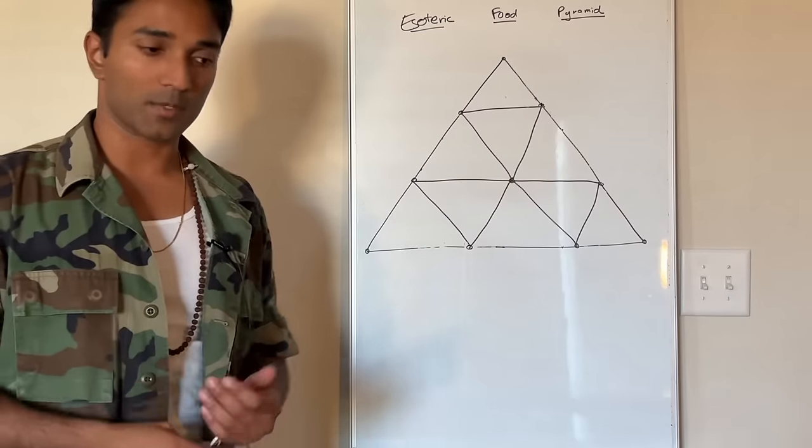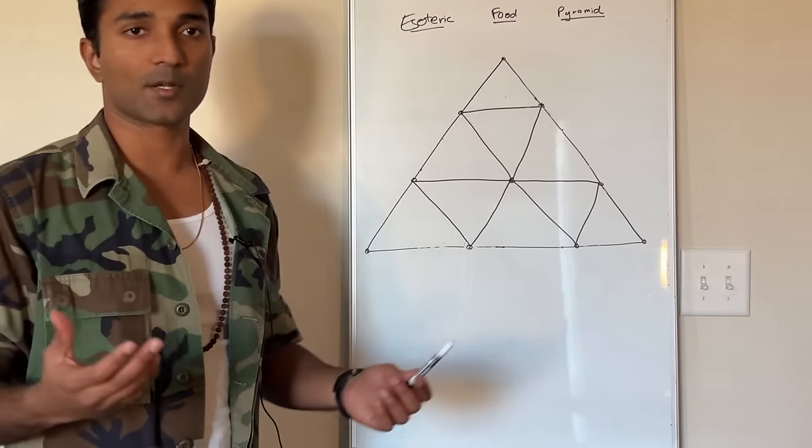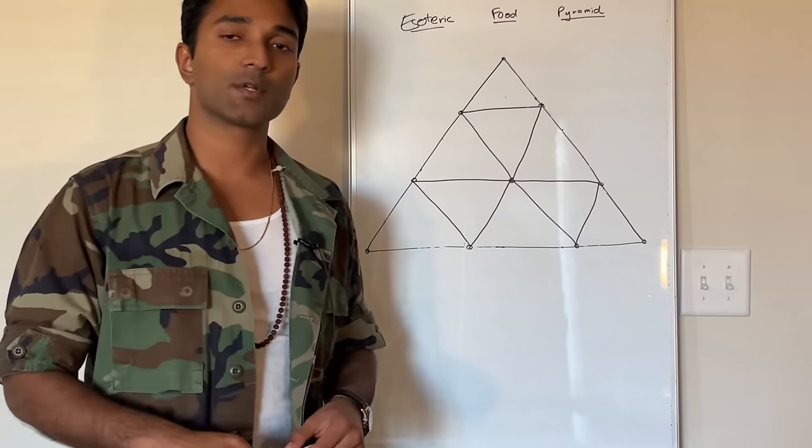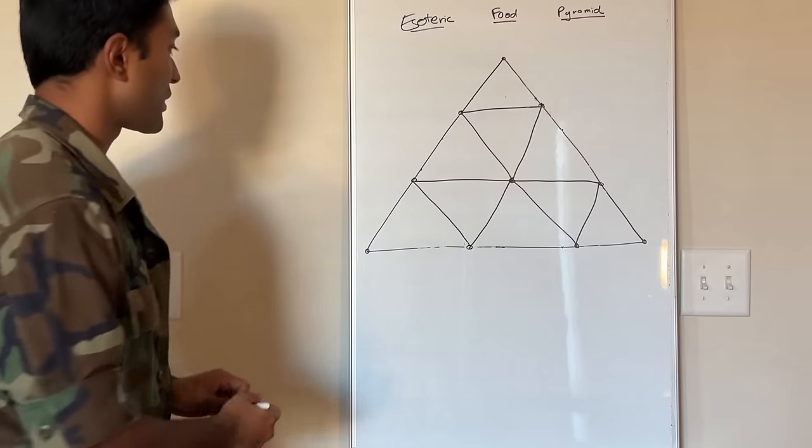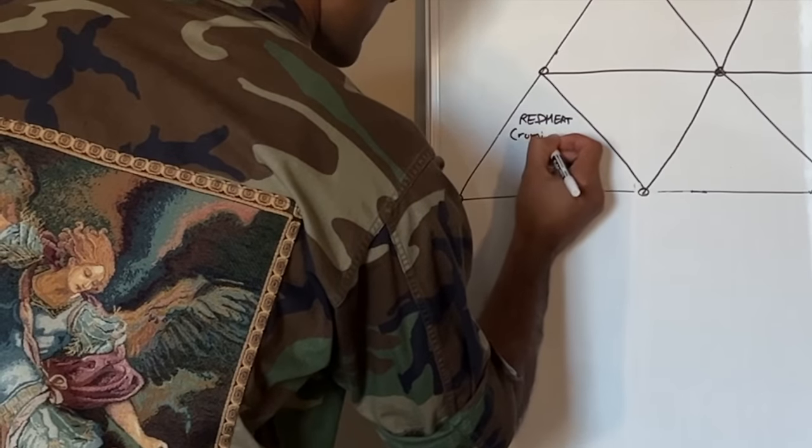All these guys have a multi-stage digestion process which means that their fat quality is going to be better. So monogastric animals like chicken, turkey, pork, their protein quality is on par, right? They're the same in terms of protein quality but they're not the same in terms of fat quality. That's why we start off with red meat, especially from ruminants.